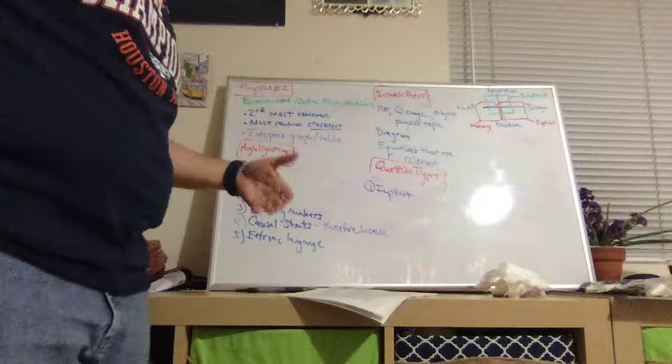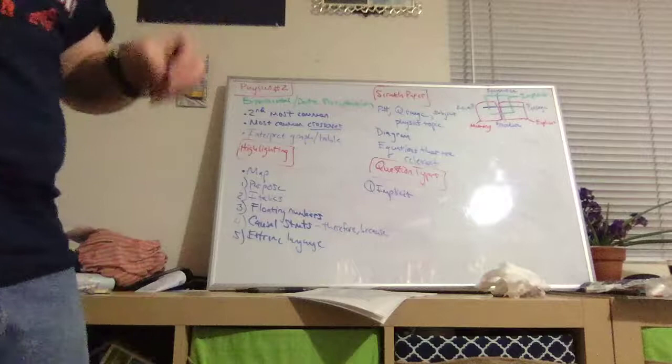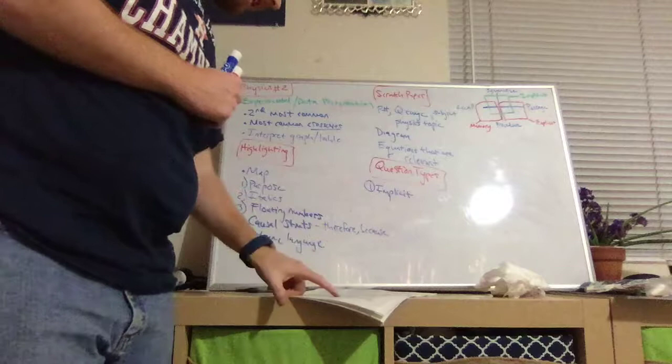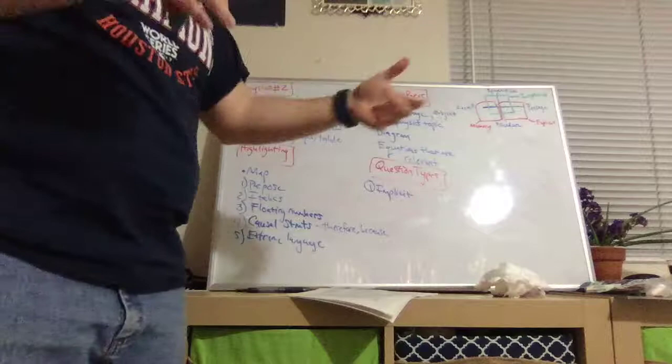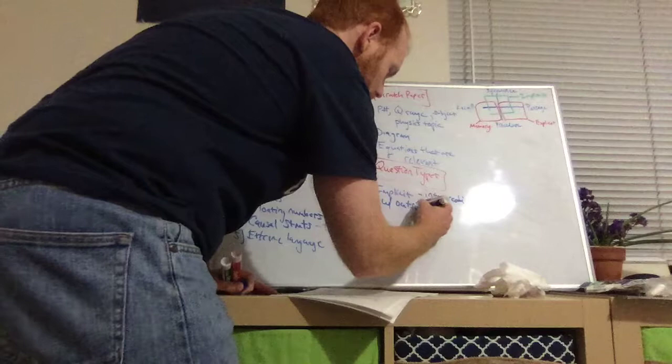So just as a reminder, Jim Bob, could you tell us what an implicit question is? Okay, that's right. An implicit question is one where you use outside knowledge plus information from the passage and kind of bring things together and synthesize them. So for these experimental or data style passages, implicit questions will require you to interpret the data they give you based on some outside knowledge. So interpretation with outside knowledge.